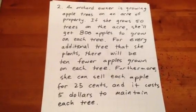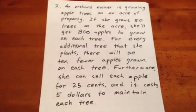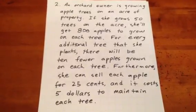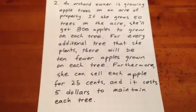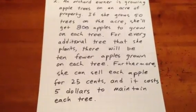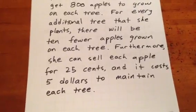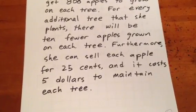An orchard owner is growing apple trees on an acre of property. If she grows 50 trees on the acre, she'll get 800 apples to grow on each tree. For every additional tree that she plants, there will be 10 fewer apples grown on each tree because they'll be fighting for resources. Furthermore, she knows she can sell each apple for 25 cents and that it costs $5 to maintain each tree.